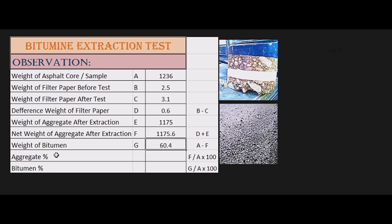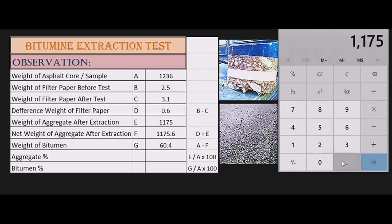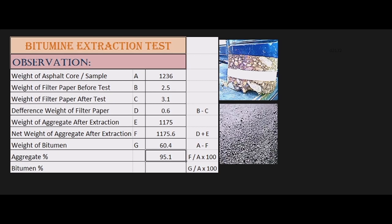Now we need aggregate percentage and bitumen percentage. The formula is F divided by A multiply by 100. Net weight of aggregate divided by total weight and multiply by 100 equals 95.1 percent. 95.1 percent is aggregate.